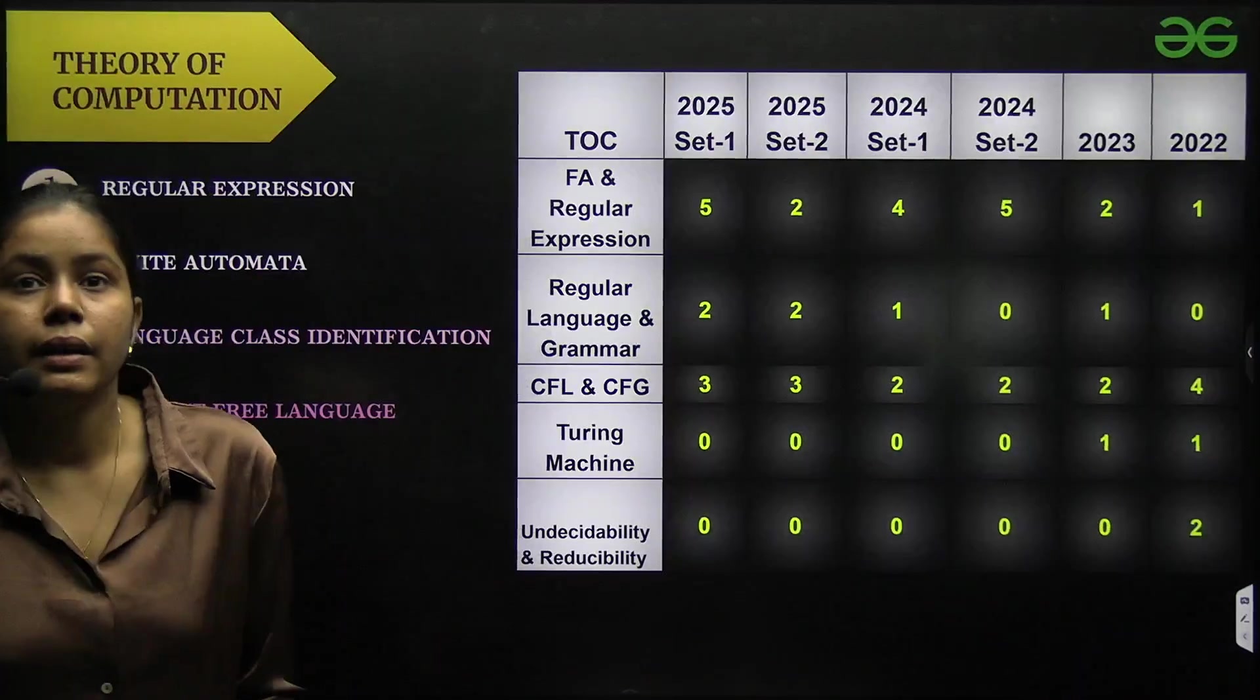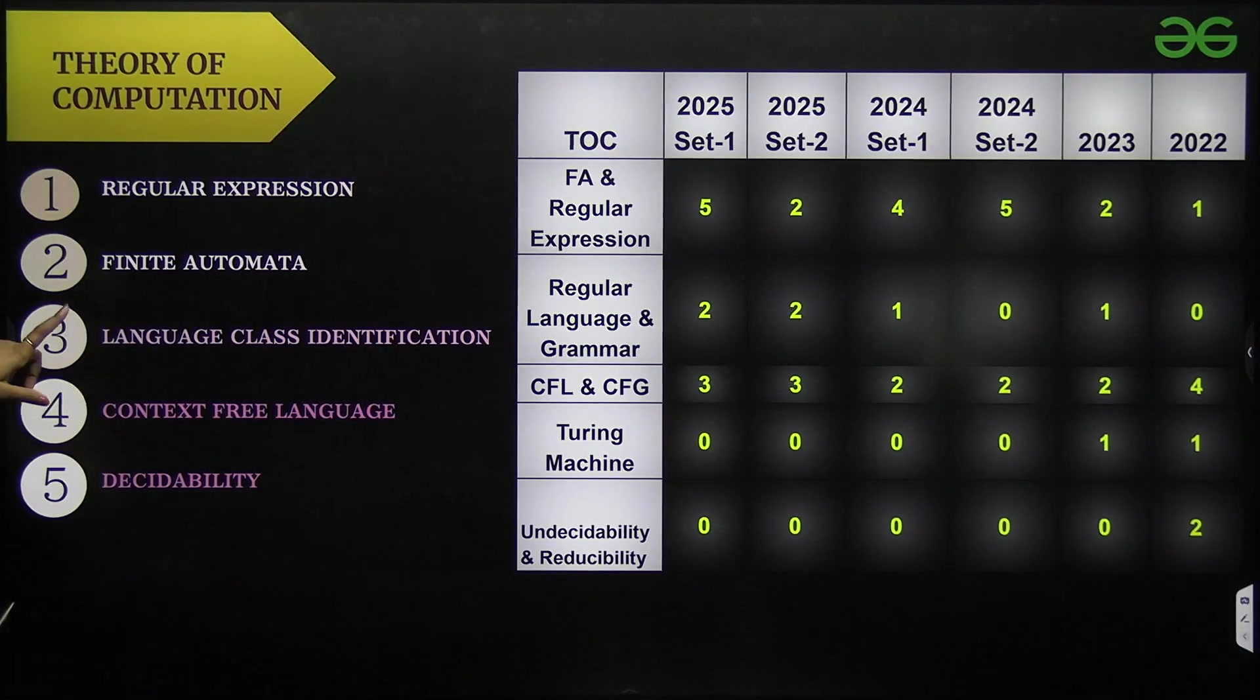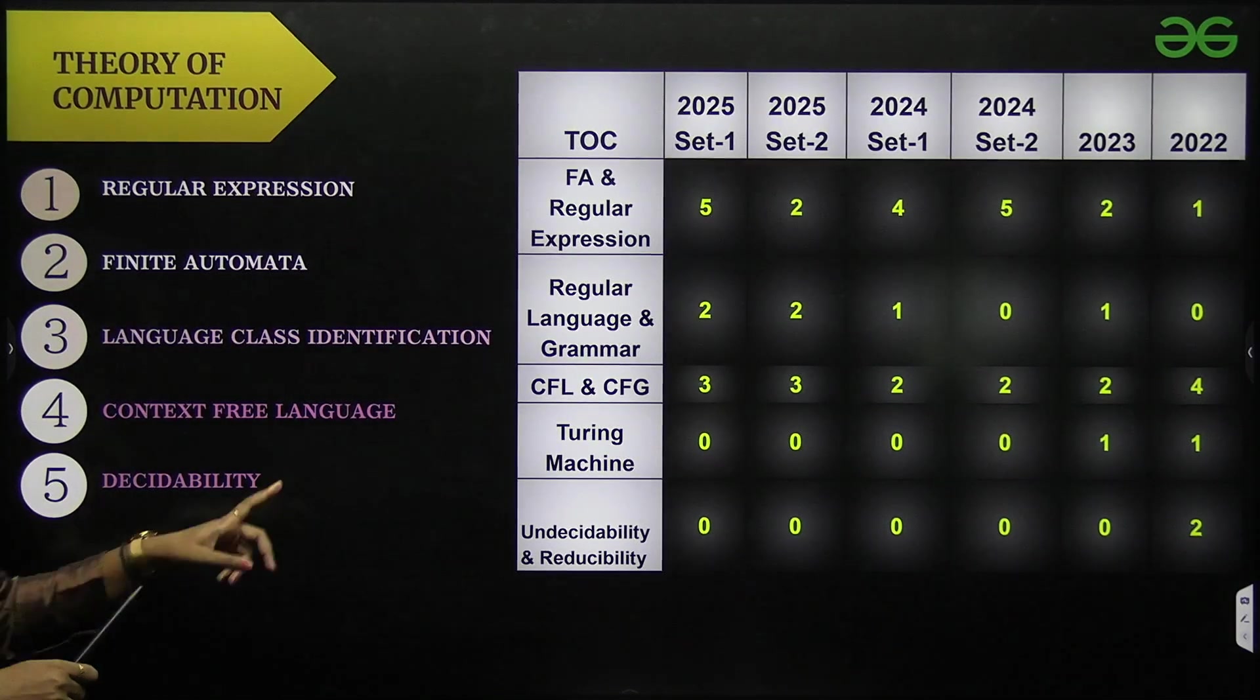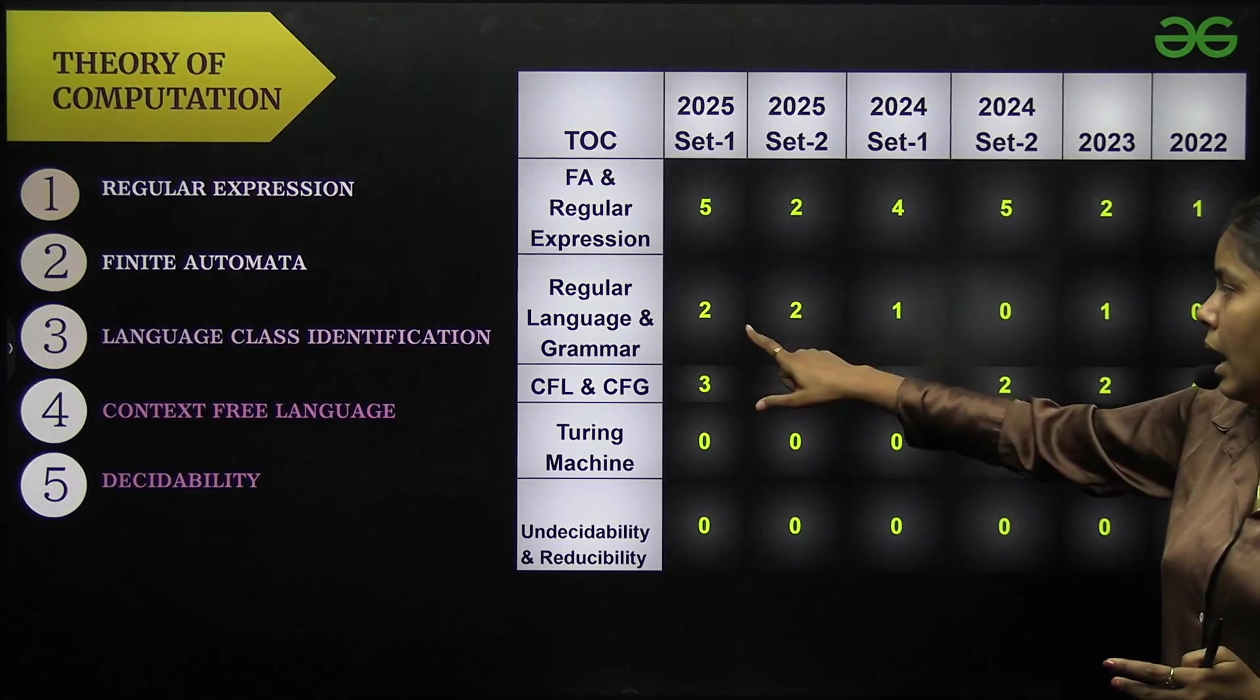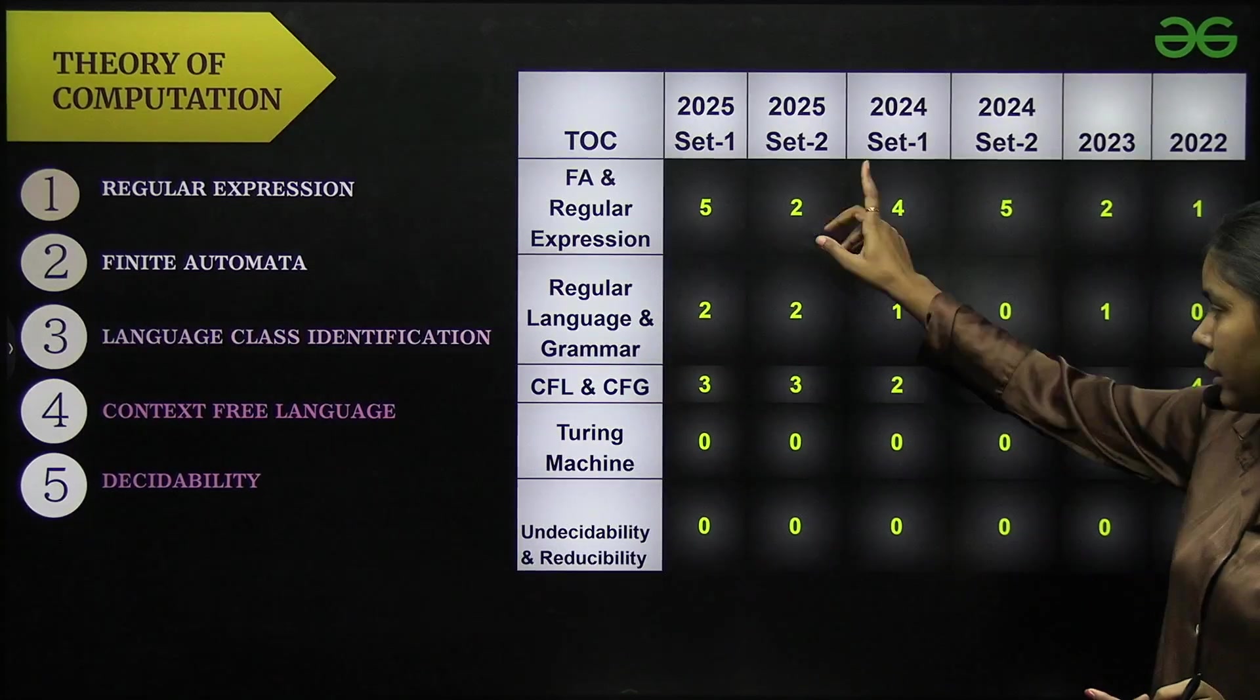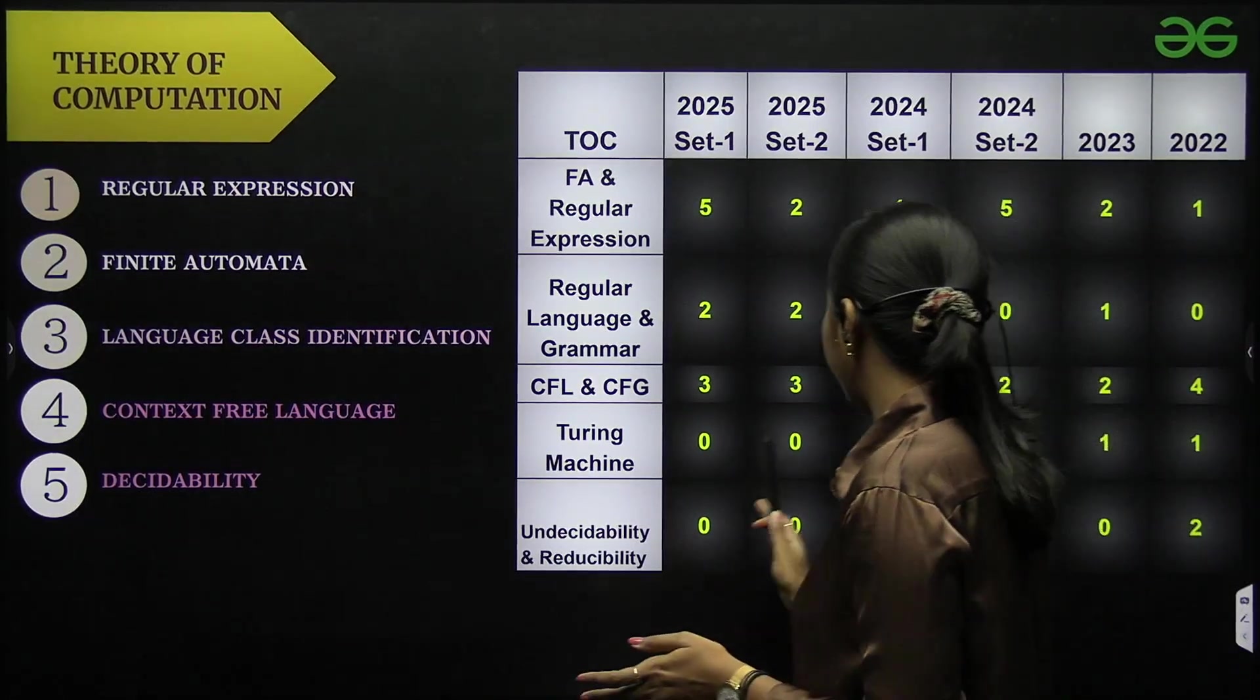Next I have here is theory of computation. In theory of computation important topics are: regular expression, finite automata, language class identification, context free language, and decidability. You can see that regular expression they have asked five marks questions in set one, two marks in set two, and regular language and grammar set one two marks, set two two marks, and context free language three marks each.